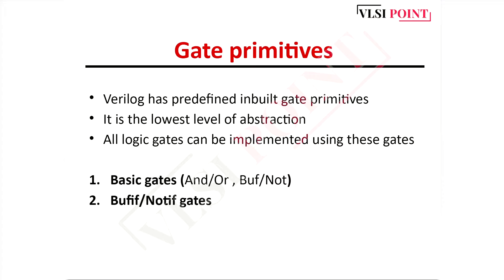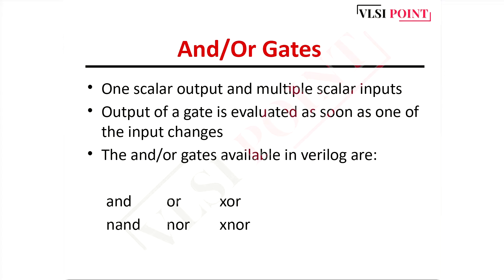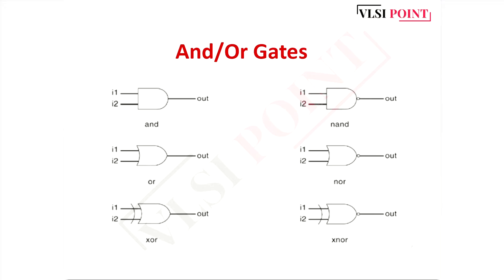Starting from basic gates - in and/or gates, one scalar output and multiple scalar inputs are there. The output of the gate is evaluated as soon as one of the inputs changes. The and/or gates available in Verilog are: and gate, or gate, nand gate, nor gate, xor and xnor gate. Here you can see the symbols of these gates.